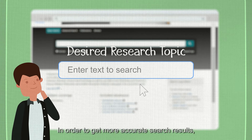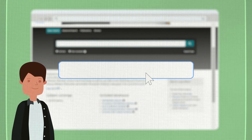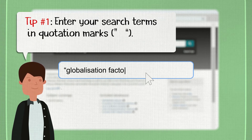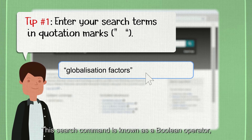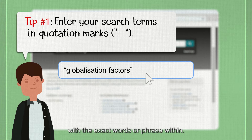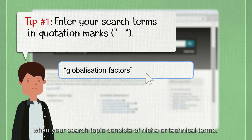In order to get more accurate search results, here are a couple of useful tips. Enter your search term in quotation marks. This search command is known as a Boolean operator, and the database will give you results with the exact words or phrase within. This is especially useful when your search topic consists of niche or technical terms.